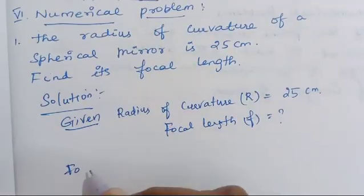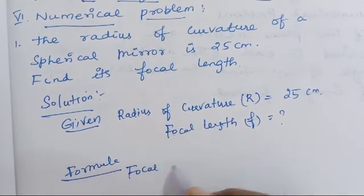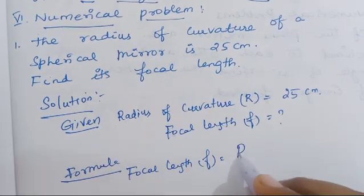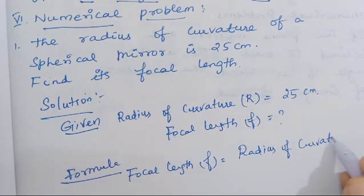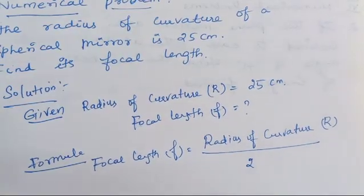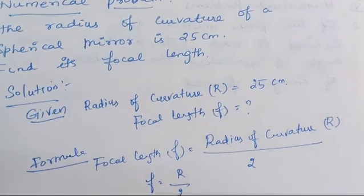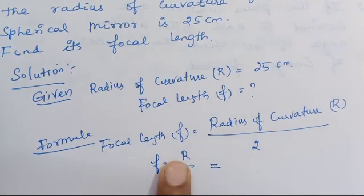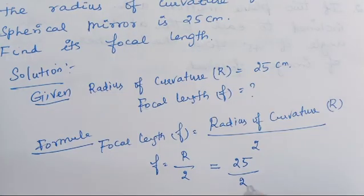Our next step is the formula. Focal length F equals radius of curvature R divided by 2. So simply F equals R by 2. We can substitute the R value as 25, so directly substitute 25 divided by 2 cm.